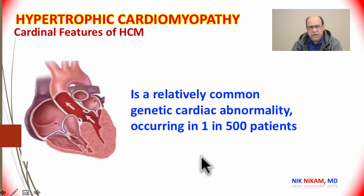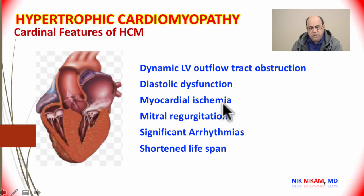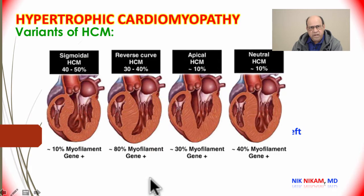Hypertrophic cardiomyopathy is a relatively common genetic cardiac abnormality occurring in one in 500 patients. It is characterized by dynamic left ventricular outflow tract obstruction, diastolic dysfunction, myocardial ischemia especially in the subendocardial region, evidence of mitral regurgitation, significant ventricular arrhythmias, sudden death, and shortened lifespan.